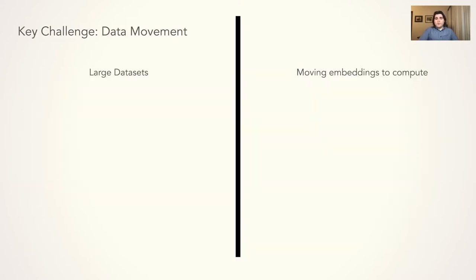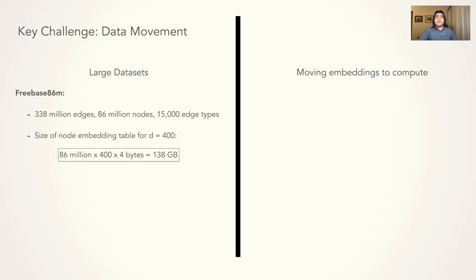This is not a problem for small graphs, but for large graphs, the embedding table can easily be larger than GPU memory capacity. For example, the Freebase 86M dataset, a subset of the Freebase Knowledge Graph, has 338 million edges, 86 million nodes, and 15,000 edge types.